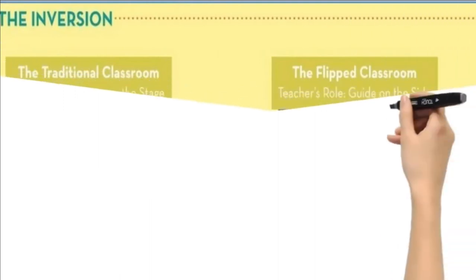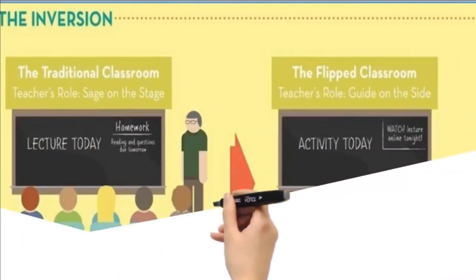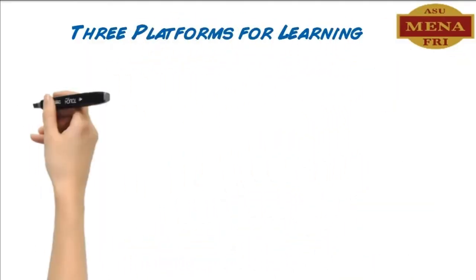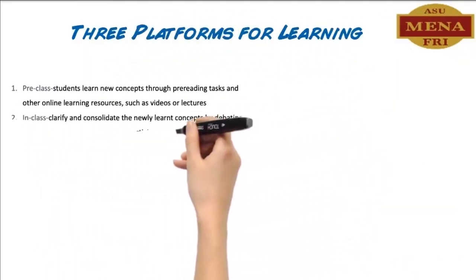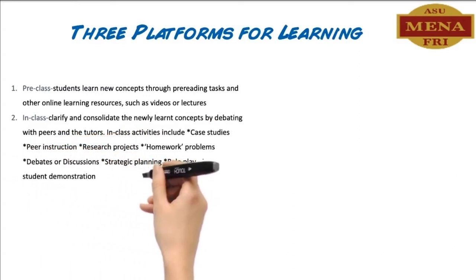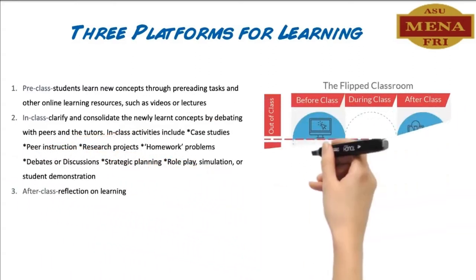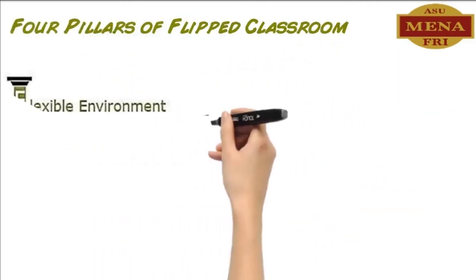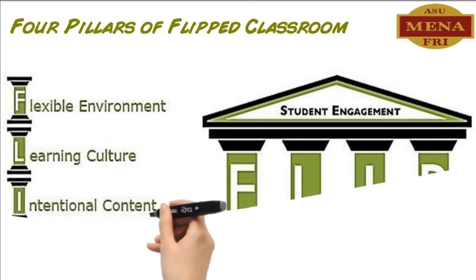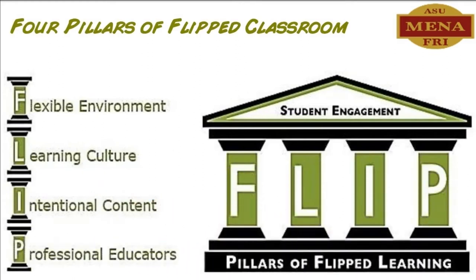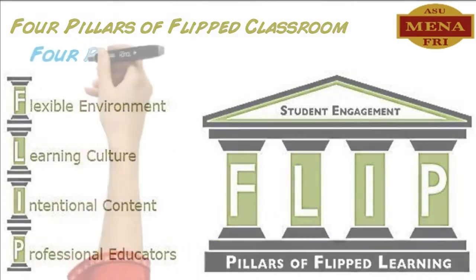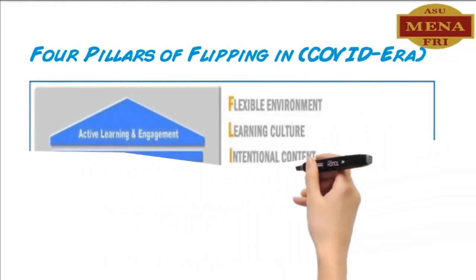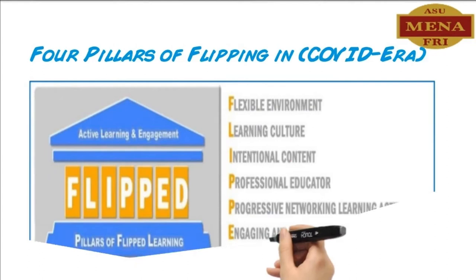The teacher's role in traditional learning is 'sage on stage,' while in Flipped Classroom it is 'guide on the side.' In Flipped Classroom, there are three platforms for learning: first, pre-class materials; second, in-class activities; and lastly, after-class reflection and assessment. The four pillars of Flipped Classroom include F for flexible environment, L for learning culture, I for intentional content, and P for professional educators. In the COVID era, two parameters were added: E for engaging activities and D for diversified learning platforms.